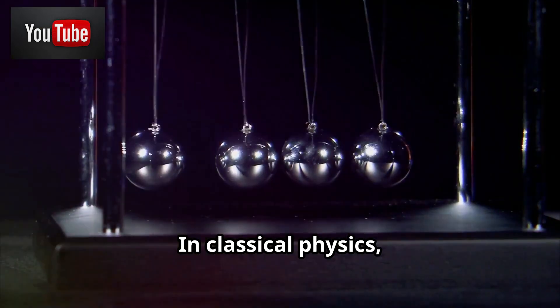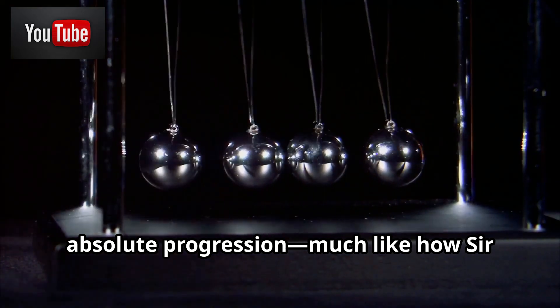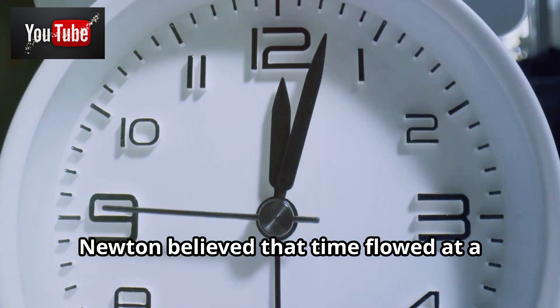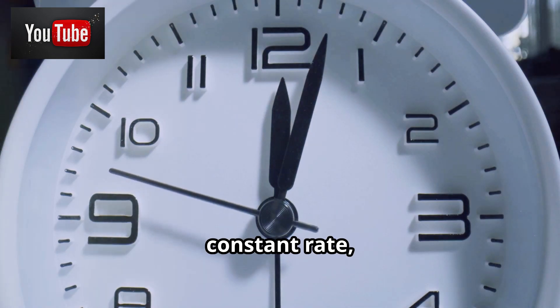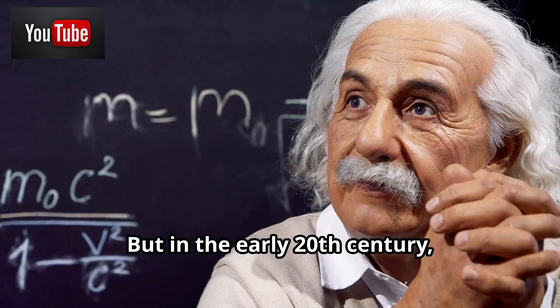In classical physics, time is often seen as a linear, absolute progression, much like how Sir Isaac Newton imagined it. Newton believed that time flowed at a constant rate, independent of the observer. But in the early 20th century, Albert Einstein came along and completely changed how we think about time.